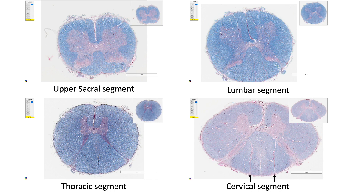Thirdly, due to the increase in the number of fibers in the dorsal column at higher levels, the central canal appears to be more posteriorly positioned in the sacral and lumbar segments, and assumes a more anterior position in the cervical segments. And lastly, thoracic segments show the presence of intermediate horns.